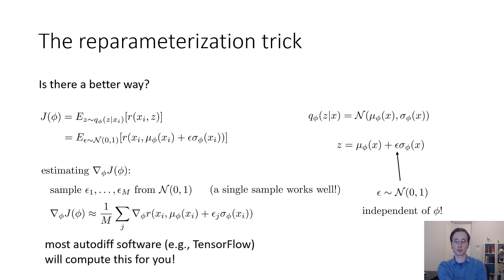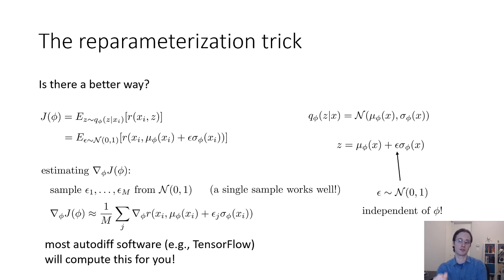This gradient estimator has lower variance because we're actually using the derivatives of R, whereas the policy gradient didn't use the derivatives of R. Most automatic differentiation software like TensorFlow or PyTorch will calculate this for you — you don't need to know how to differentiate P_theta of X_i and Z yourself. You just implement it in AutoDiff and let it handle everything. The only unusual thing is that you have to sample these epsilons; otherwise it looks like just any other neural network.